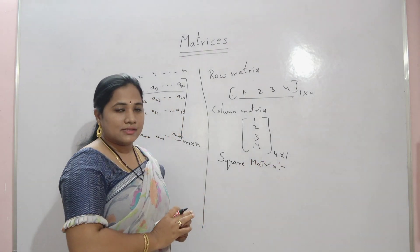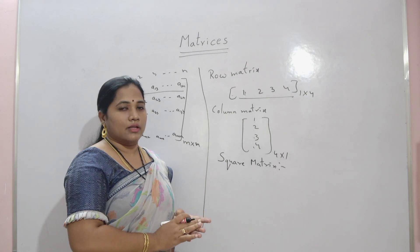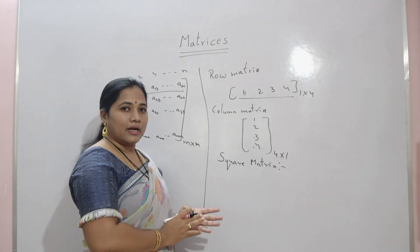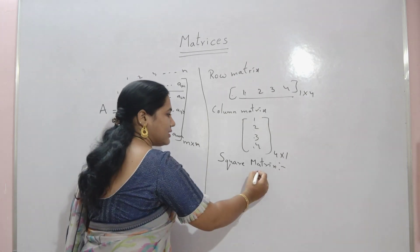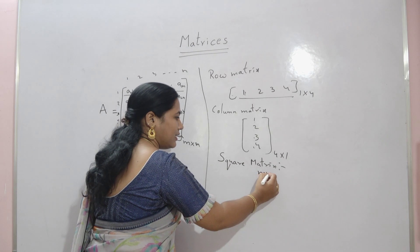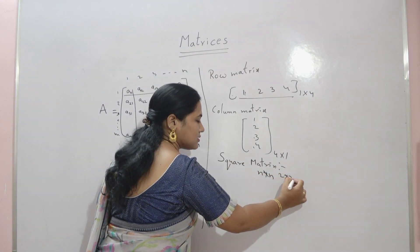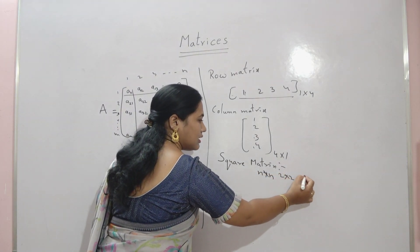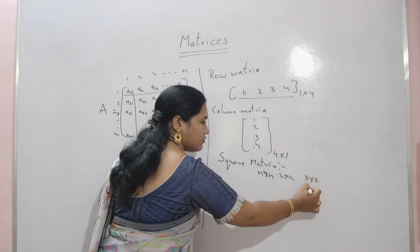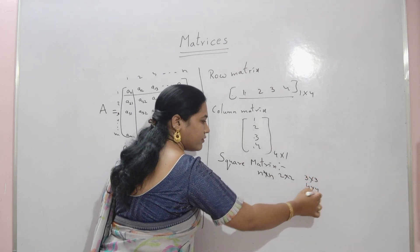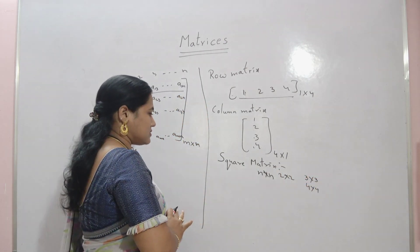The next one is a square matrix. In a matrix, if the number of rows and columns are equal, then that matrix is called a square matrix. It is an n by n matrix — so a 2 by 2 matrix, or 3 by 3, 4 by 4 — these are all square matrices.